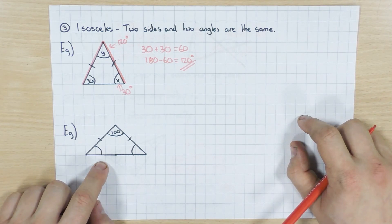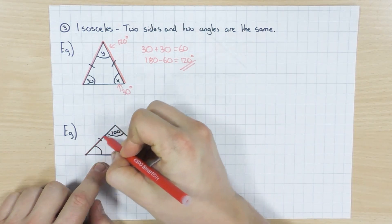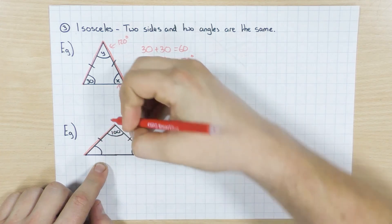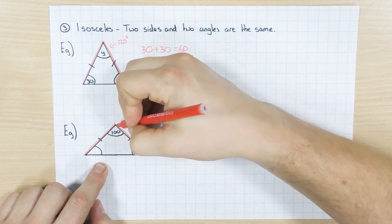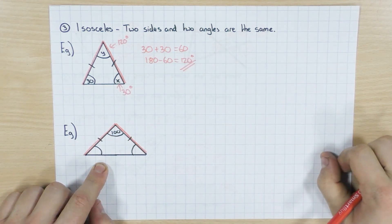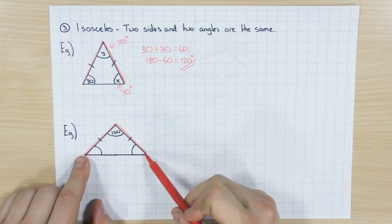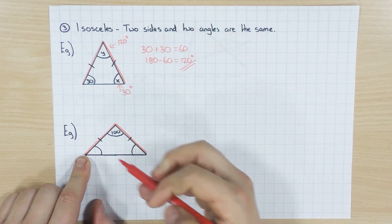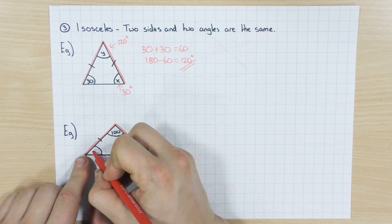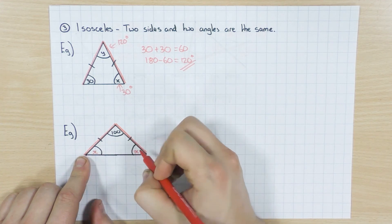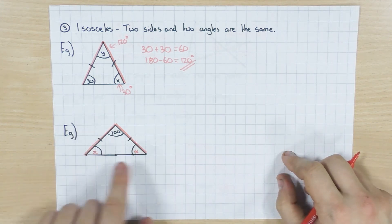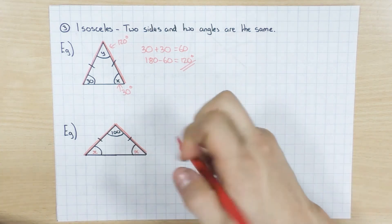This is the other case where you can have an isosceles triangle. So again, because I've got two sides the same, I'm just going to highlight the fact that it's those two sides that are the same. In which case, at the end, these two angles are going to be the same. I don't know what they are, I'm just going to call them x. But I know they're the same because it's an isosceles triangle. So I could form an equation again.